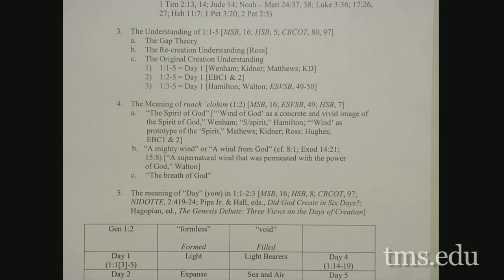How do we grammatically understand the first five verses of Genesis? 'In the beginning, God created the heavens and the earth. Now the earth was formless and void, and darkness was over the surface of the deep. And the Spirit of God was moving over the surface of the waters. And God said, let there be light, and there was light. God saw that the light was good, and God separated the light from the darkness. God called the light day, and the darkness he called night. And there was evening, there was morning, one day.'